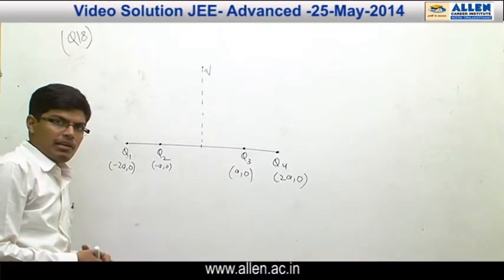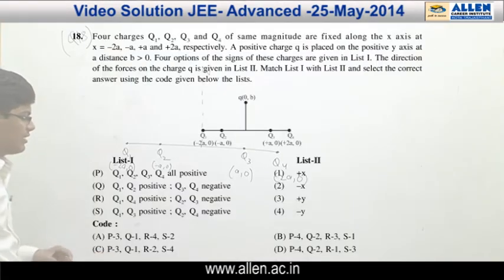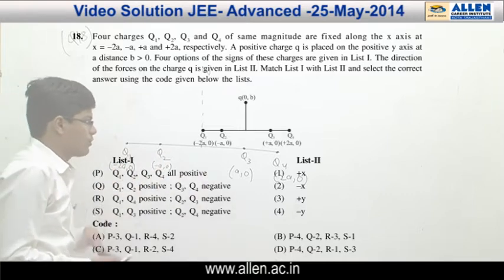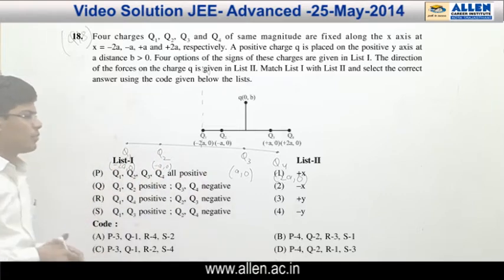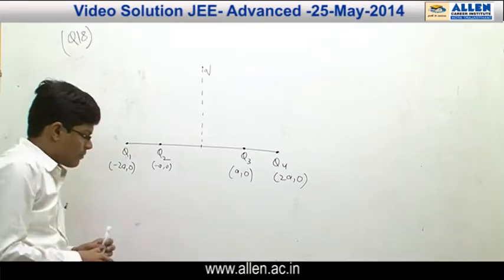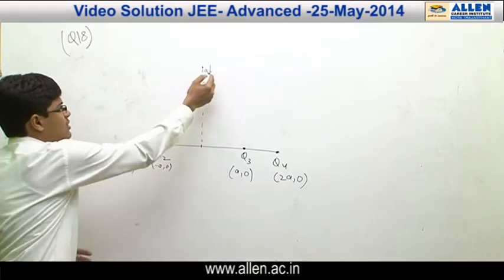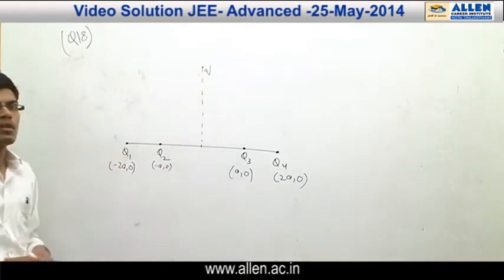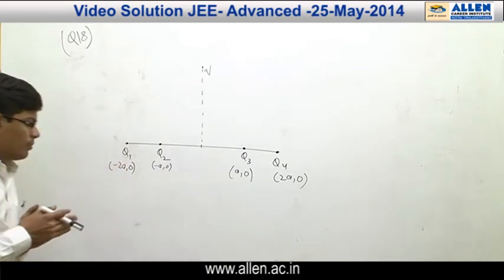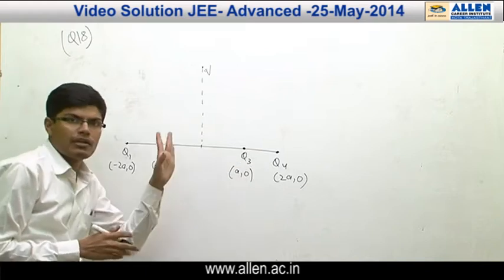We will be discussing question number 18. As given in the figure, there are 4 charges Q1, Q2, Q3 and Q4, their respective positions are shown in the figure. We are asked the direction of net force on the charge small q. Let us start with option P. All are positive charges and they are given of the same magnitude.